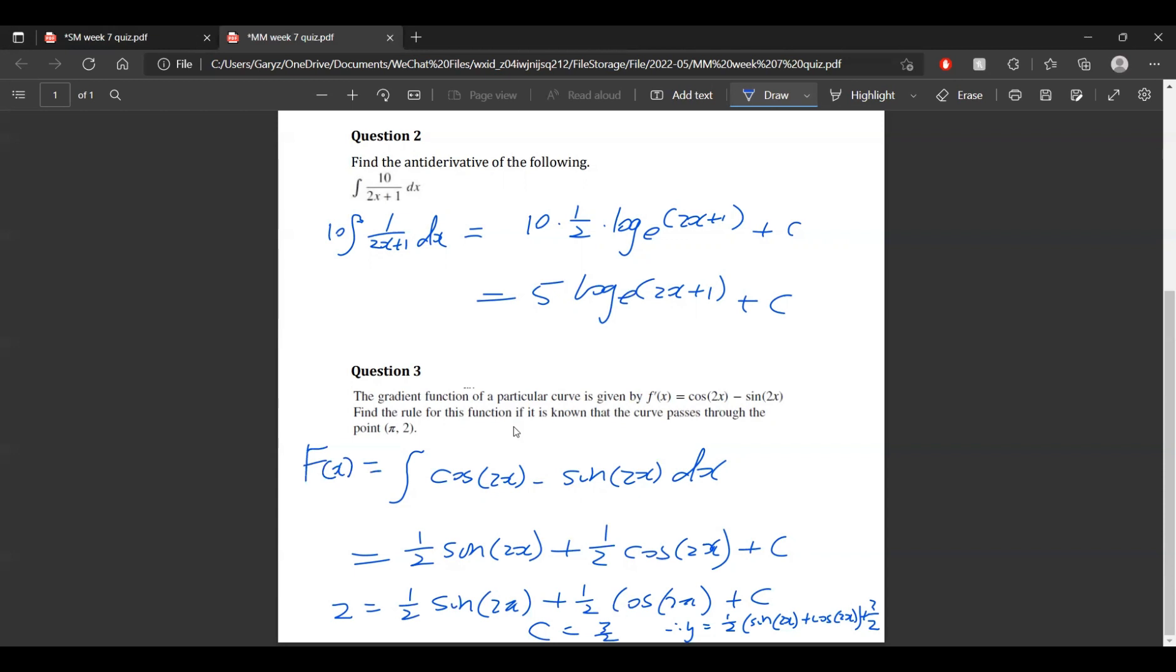Now, to get the c value, which is the starting point, which is pi and 2. So we're putting 2 as the y value, pi as the x value, and then to solve for c, we get is 3 on 2. So the final equation is y equals a half sine of 2x plus a half cosine of 2x plus 3 on 2.